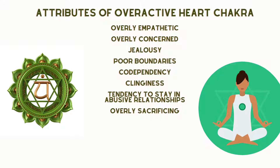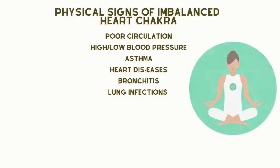The heart chakra directly affects the heart, lungs, chest, arms and hands. When the heart chakra is out of alignment, poor circulation, high or low blood pressure, asthma and other heart and lung diseases can result. Issues can also include infections of the lungs, bronchitis and circulatory problems.